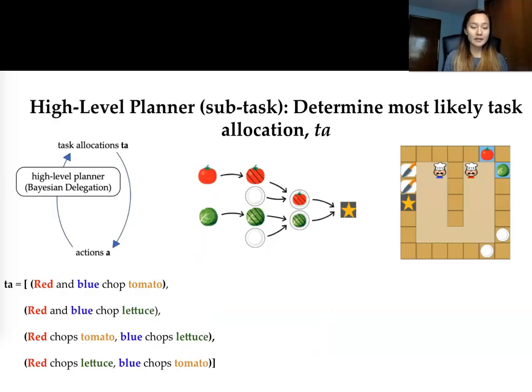So the first part is our high-level planner. The goal of the high-level planner is to determine the most likely task allocation. Let's take for example this recipe here in the middle and on this environment. The possible set of task allocations that would be available could be the following here.